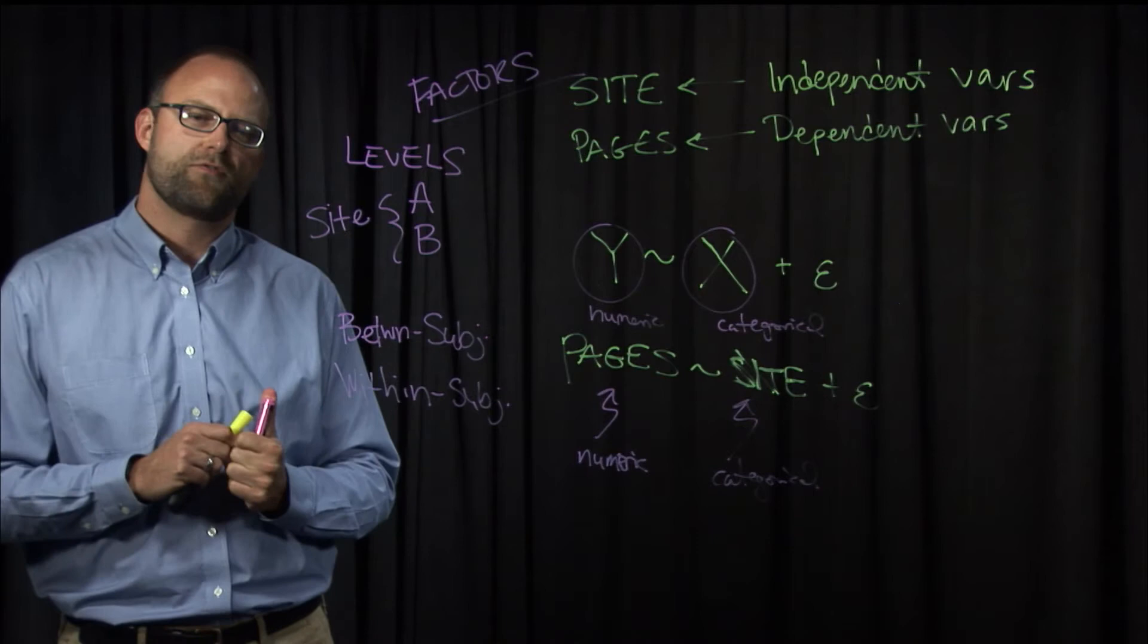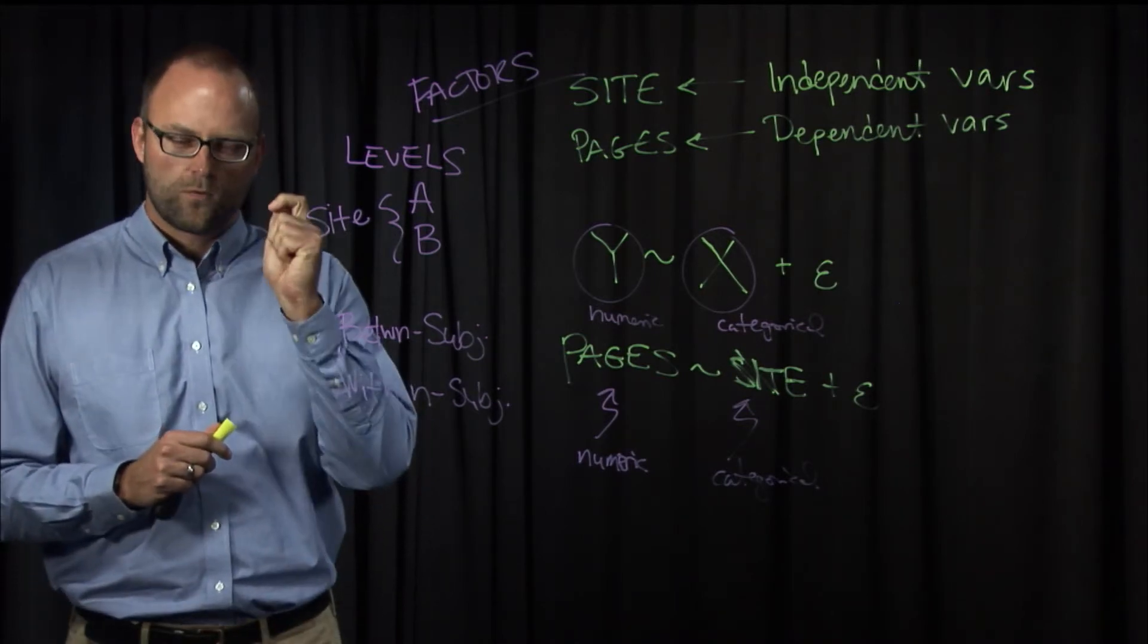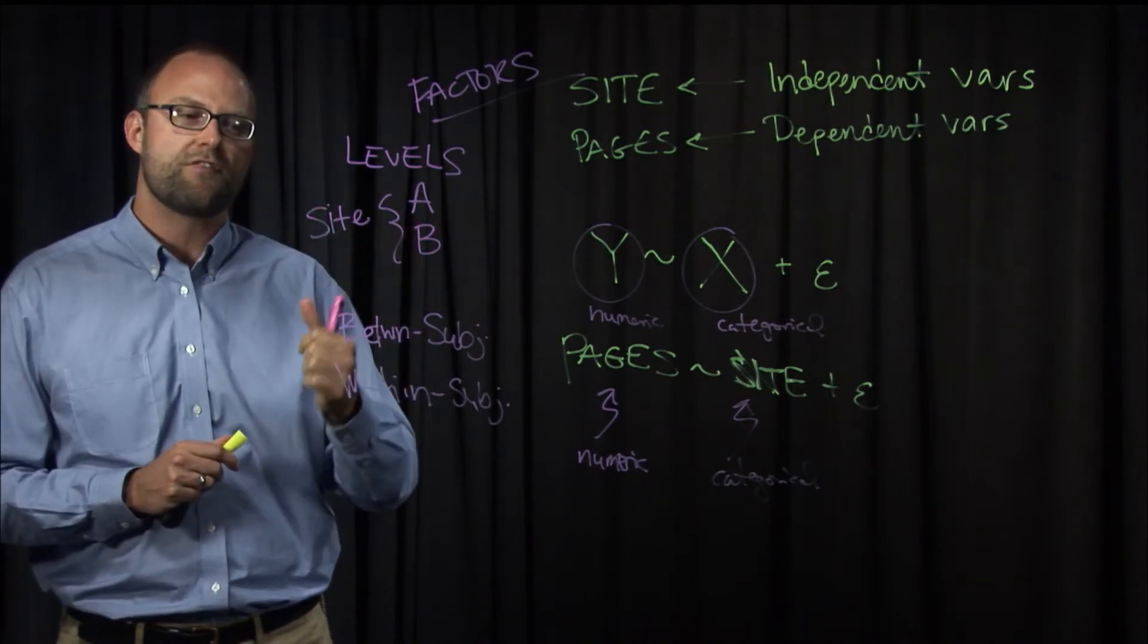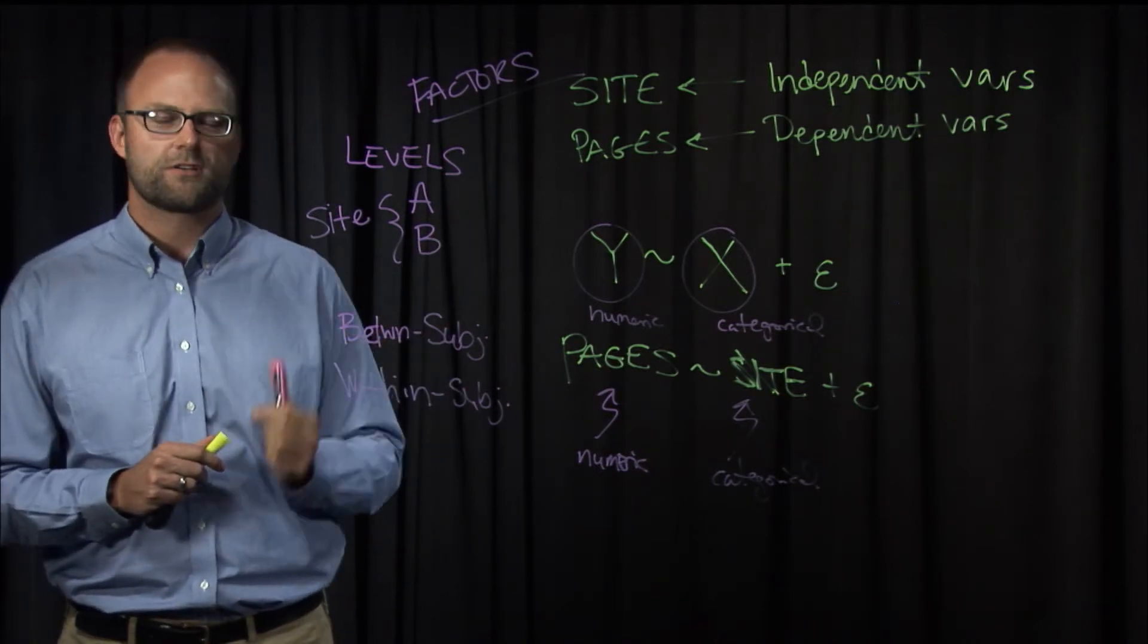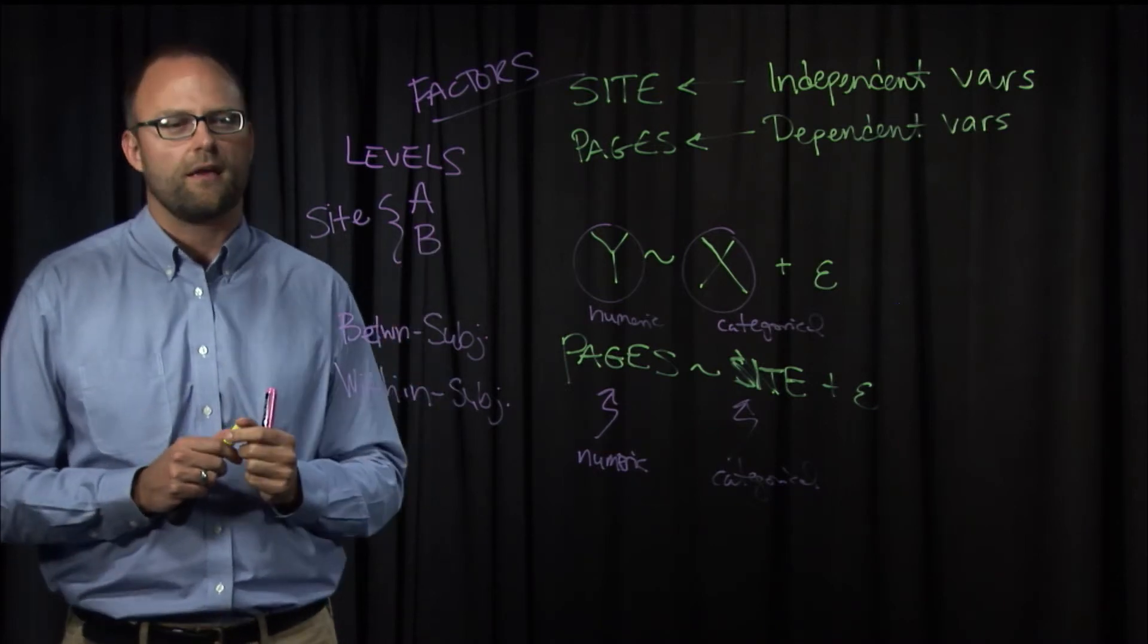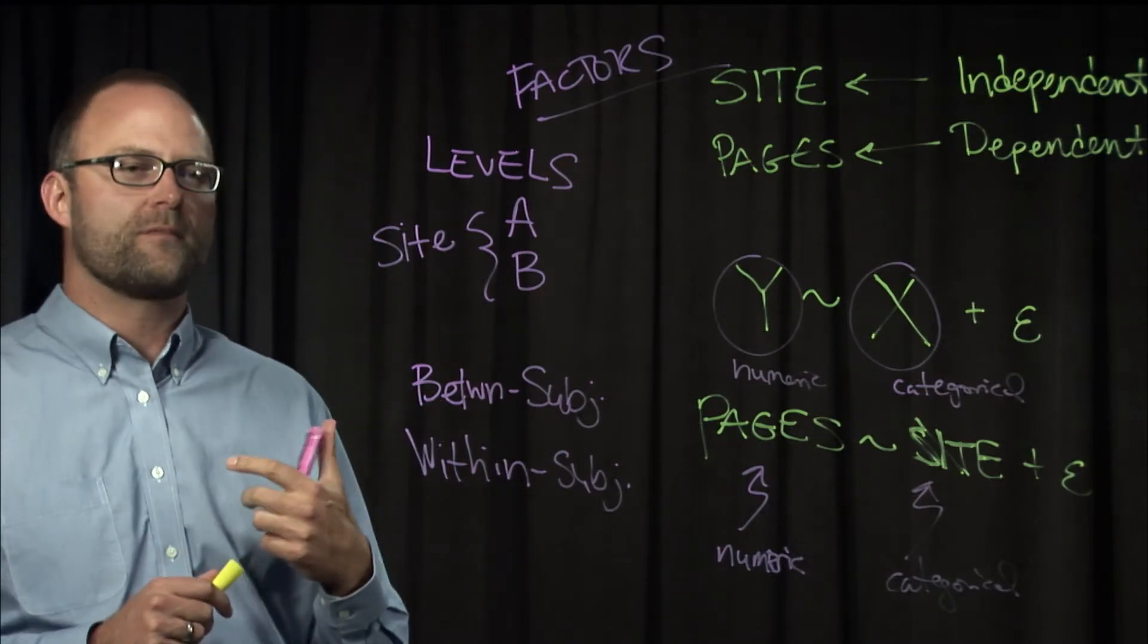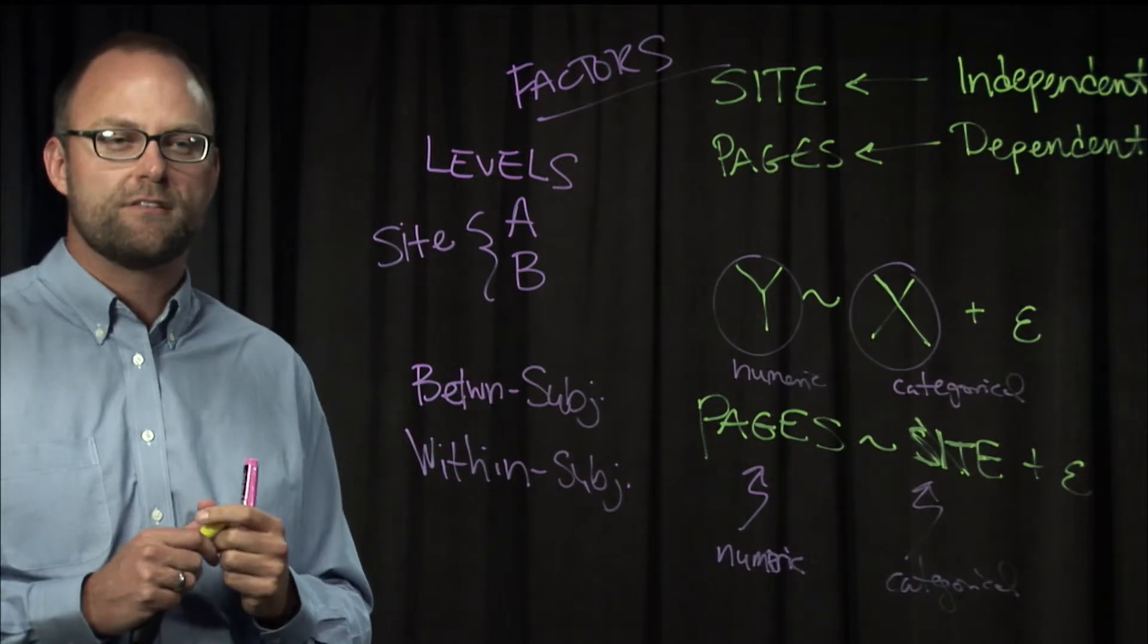A between subjects factor is one for which each subject experiences only one value or level of that factor. So in our case, each subject would experience either website A or website B, but not both.